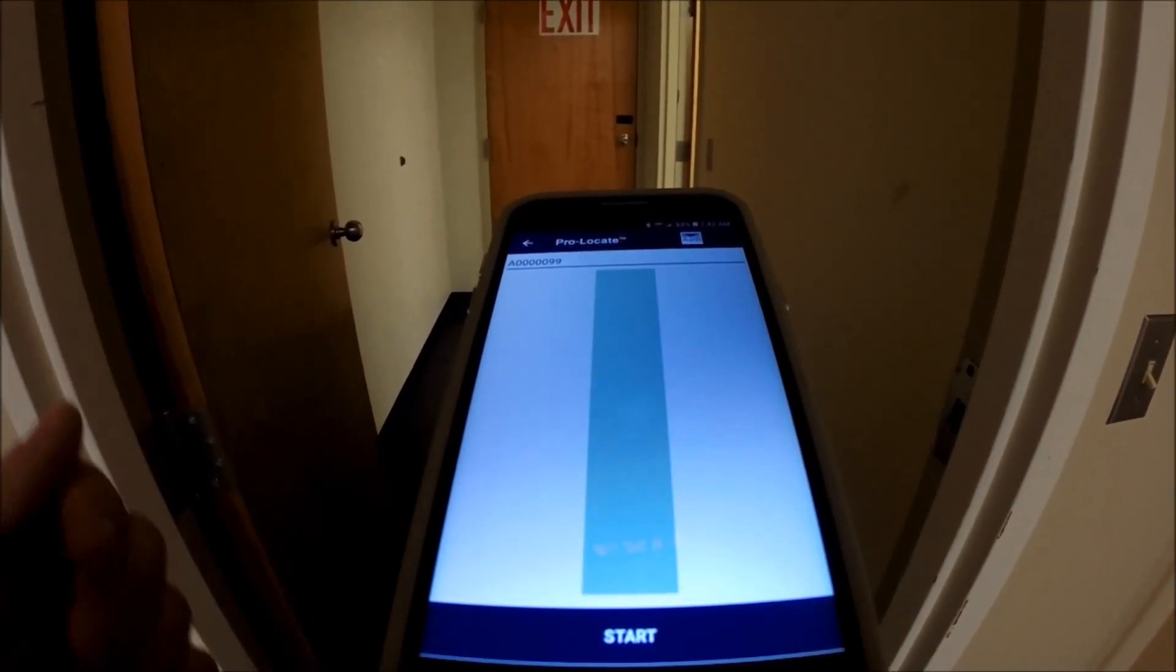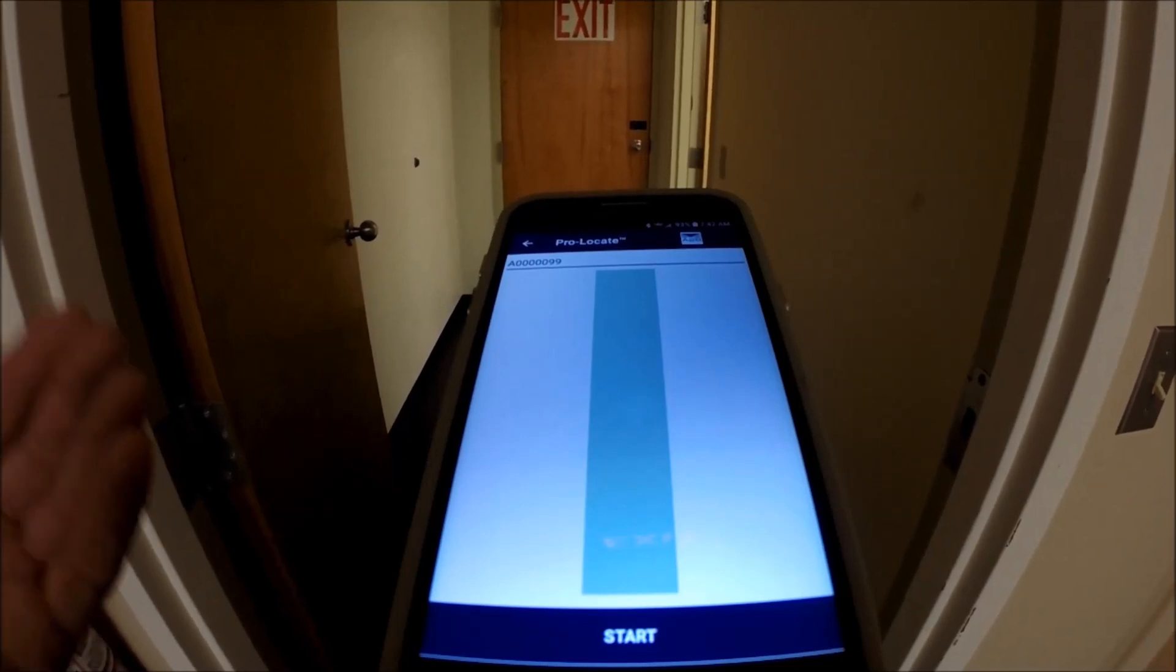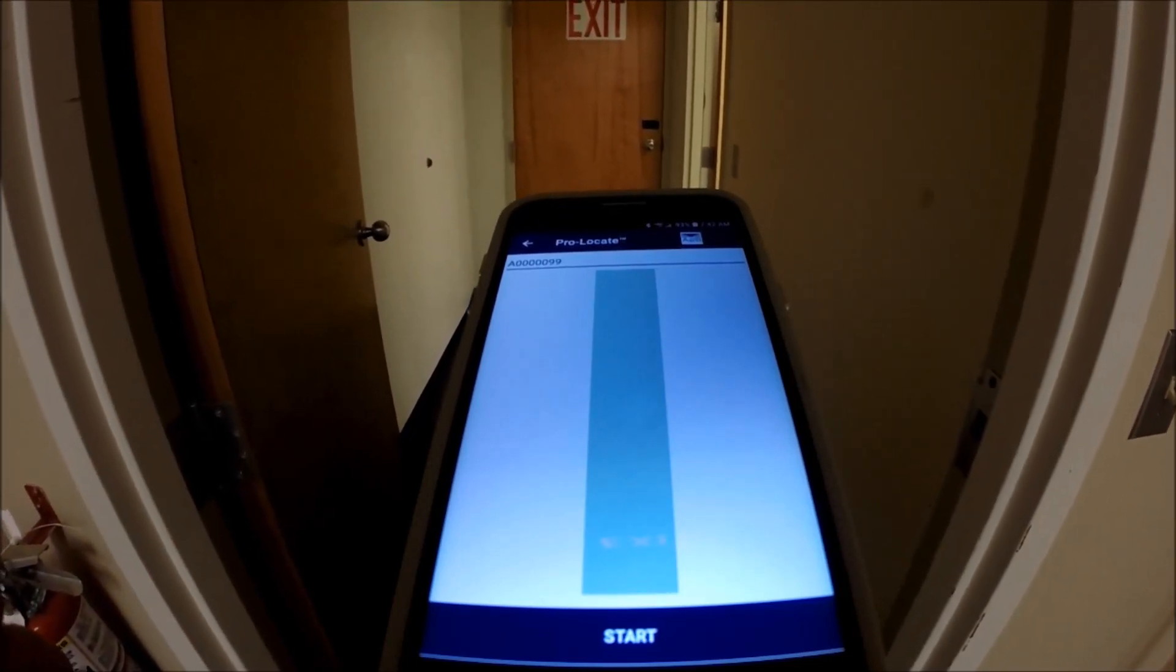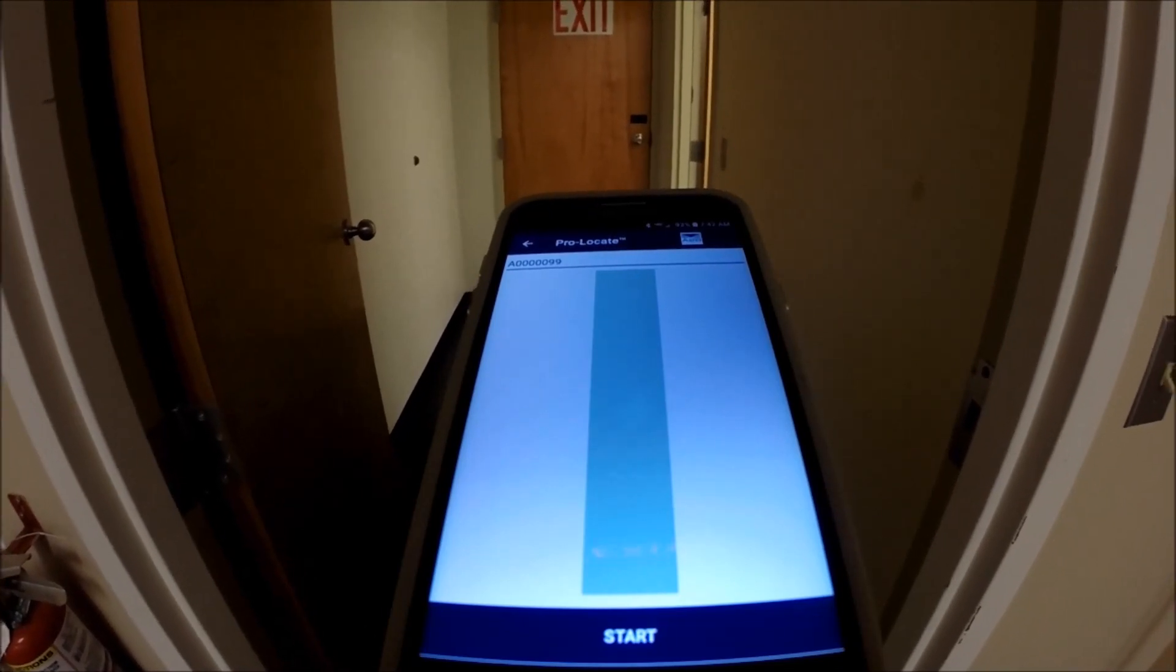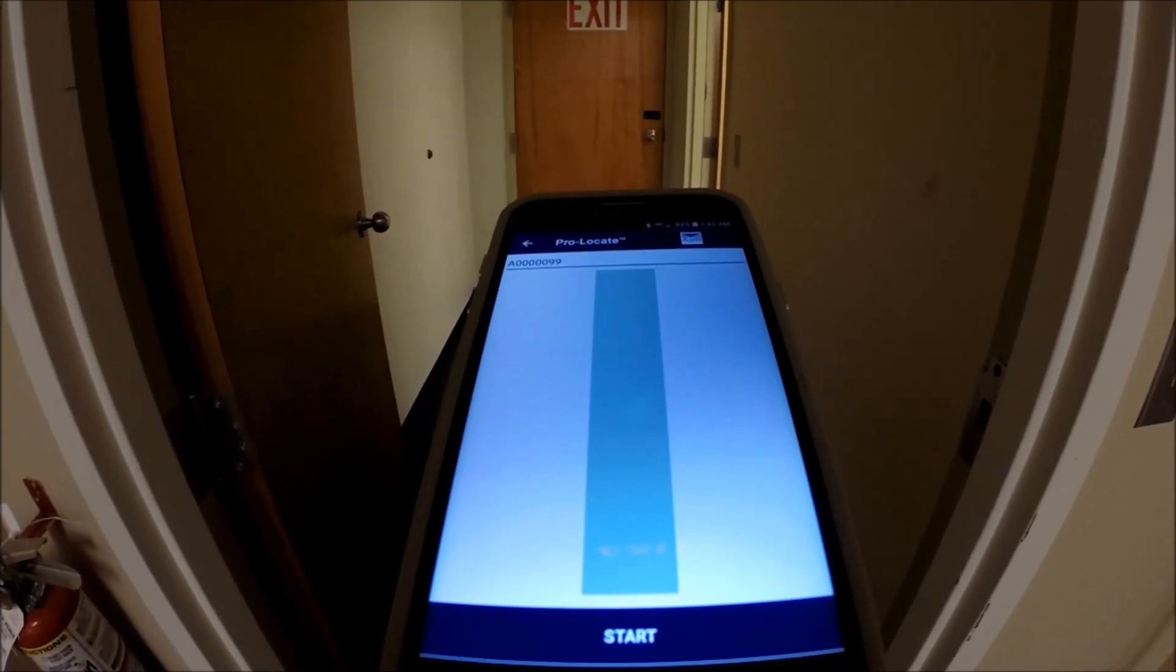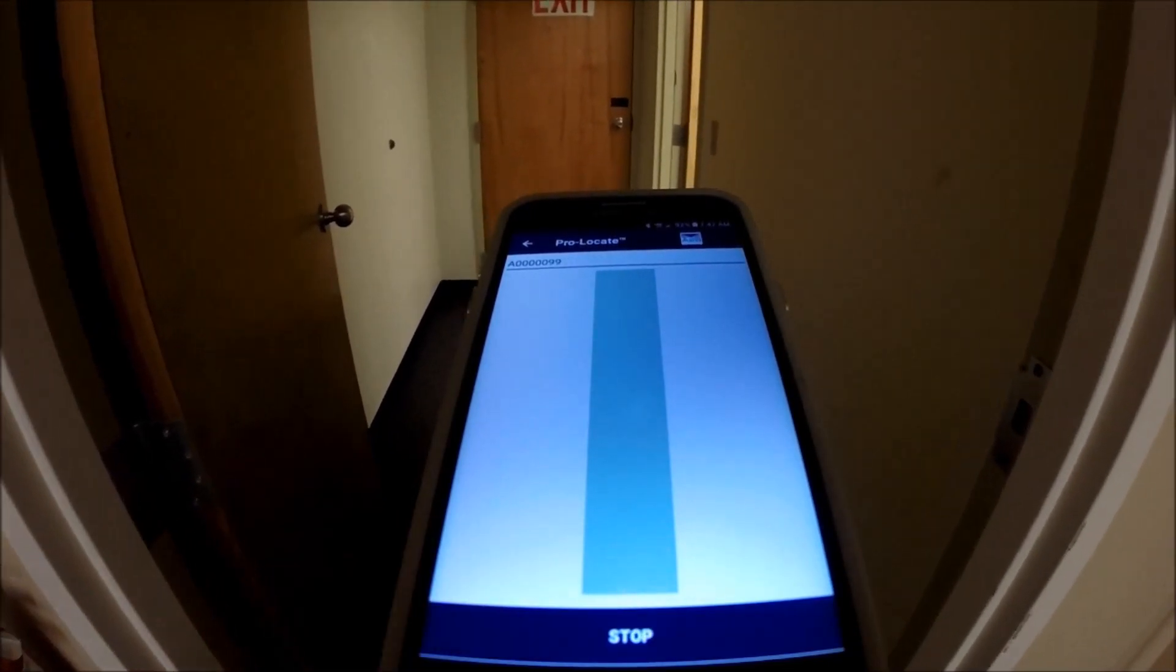ProLocate is a proximity locate using RFID to the actual tag. So within a 10, 15, 20 foot read range it'll start to detect the tag and it'll show on this scale, this meter, that I'm getting close.